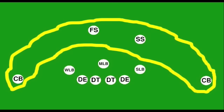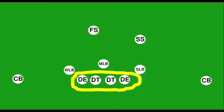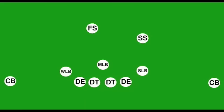First, let's talk about the lineman. Linemen play at the line of scrimmage directly across from the offensive line. They are identified here as defensive tackles, labeled DT, or defensive ends, labeled DE.